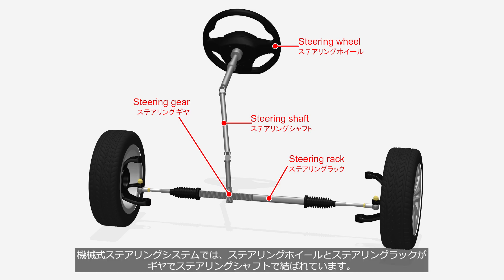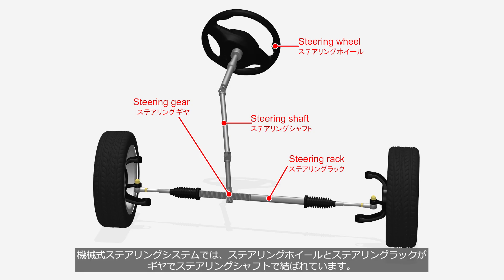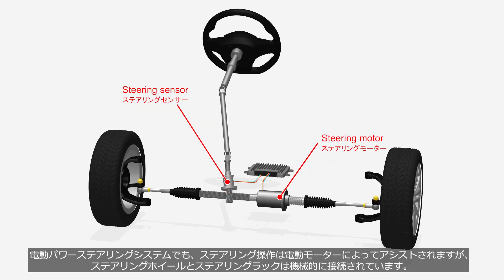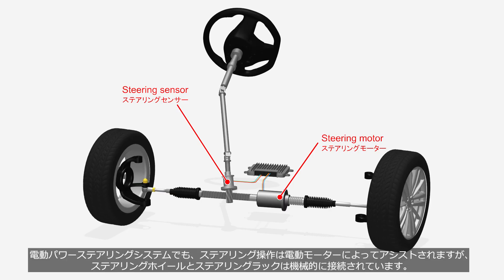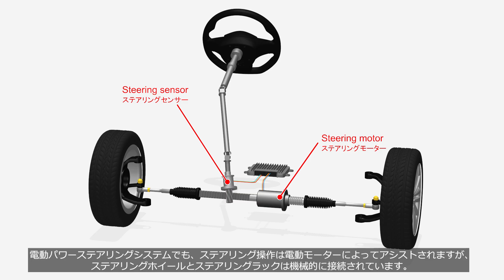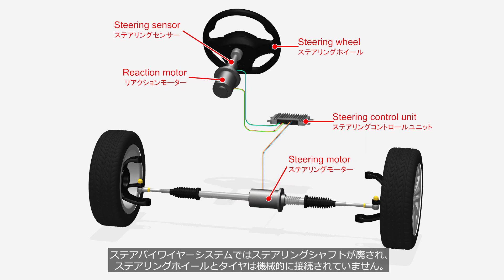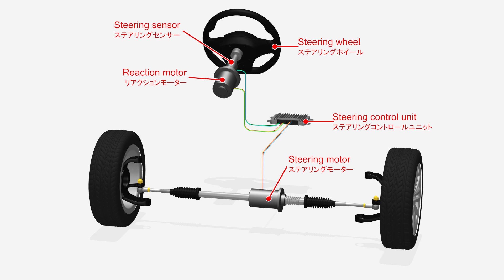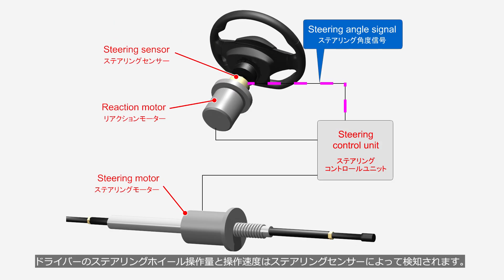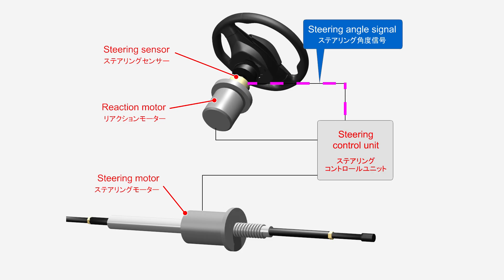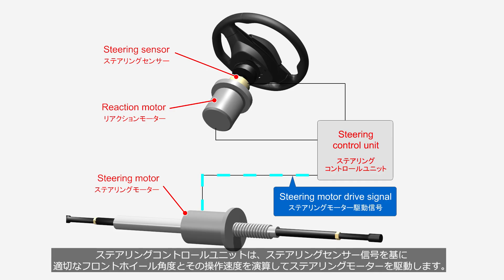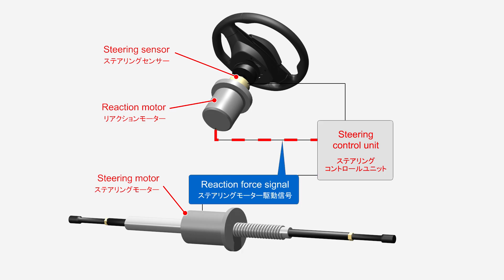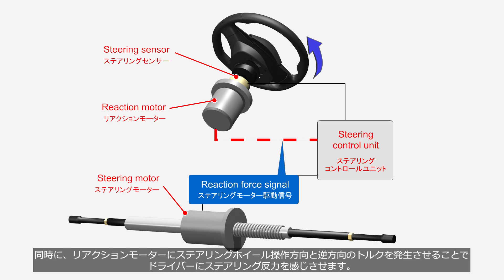In mechanical steering systems, the steering wheel and the steering rack are connected via a steering shaft and gears. In electric power steering systems, the steering is assisted by an electric motor, but the steering wheel and rack remain mechanically connected. In steer-by-wire systems, the steering shaft is eliminated and the steering wheel and tires are not mechanically connected. The driver's steering wheel input amount and speed are detected by the steering sensor, and the steering control unit calculates the appropriate front wheel angle and drives the steering motor. Simultaneously, the reaction motor generates torque in the opposite direction, allowing the driver to feel steering feedback.